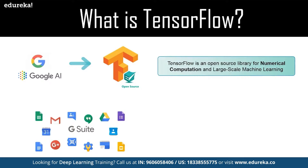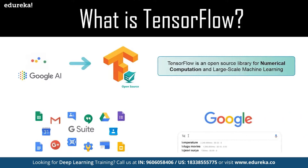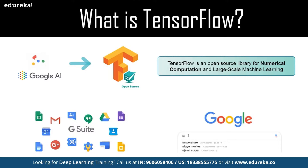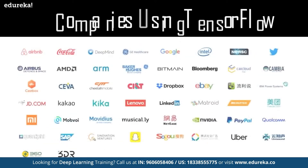Google uses machine learning in all of its products to improve the search engine, translation, image captioning, and recommendations. To give you a concrete example, Google users can experience a faster and more refined search with artificial intelligence — if the user types a keyword in the search bar, Google provides a recommendation about what the next word could be.